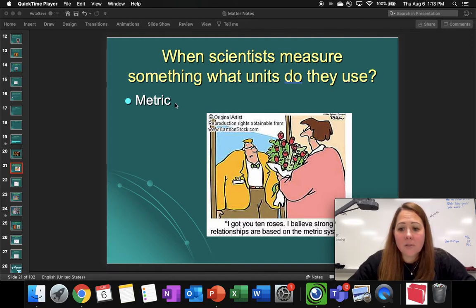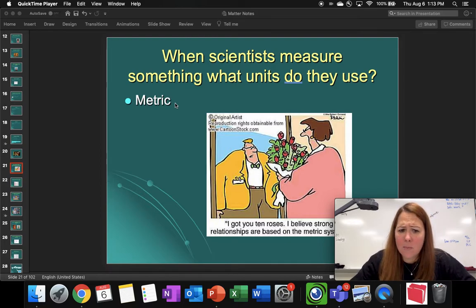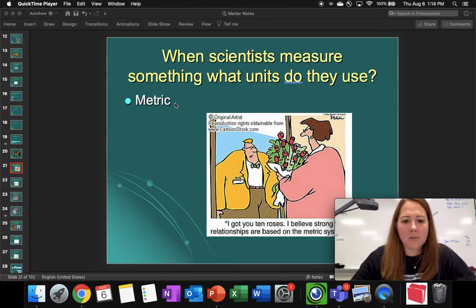The metric system is actually a great system of measurement because it uses the number 10. Everything is based off of the number 10. The units can get larger or smaller just by moving decimal places around, and you don't have to remember things like there are 12 inches in one foot or there's 5,280 feet in one mile. Things that are all frustrating for people that are converting between the Imperial system.